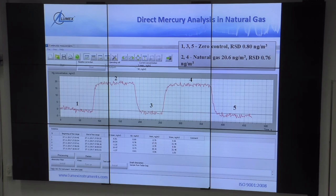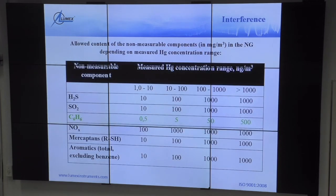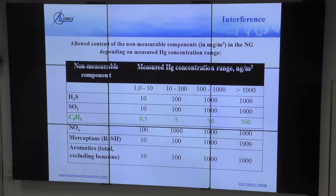The results give an average over a specified time frame — usually not less than 30 seconds to one minute. This example shows gas with a concentration of about 20 nanograms per cubic meter, which is really low. Regarding interference: in the presence of not more than 0.5 mg per cubic meter of benzene in natural gas, our working range starts from 1 nanogram per cubic meter for mercury. If benzene is at 500 mg/m³, the working range only starts from 1 microgram — not nanogram — per cubic meter.